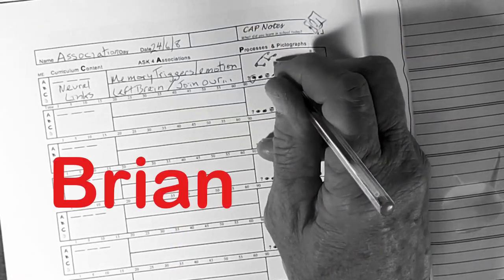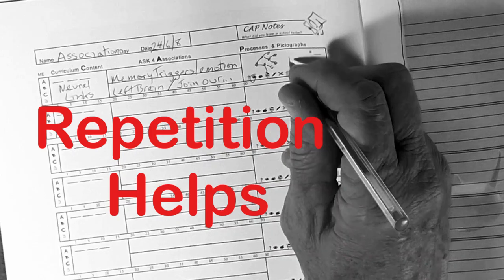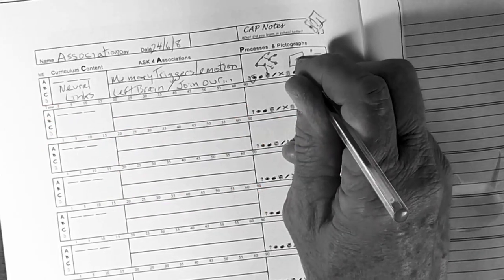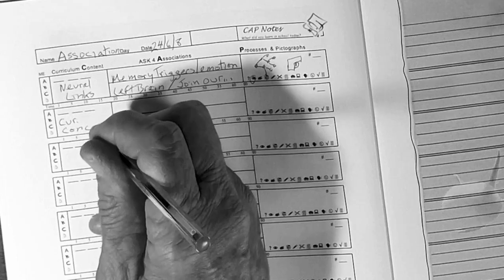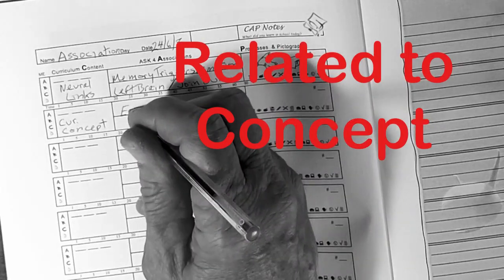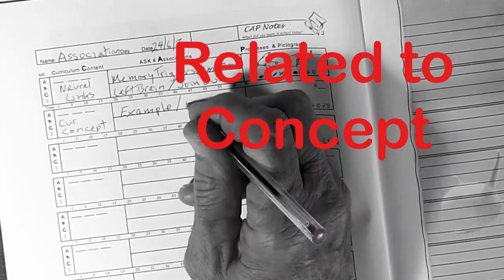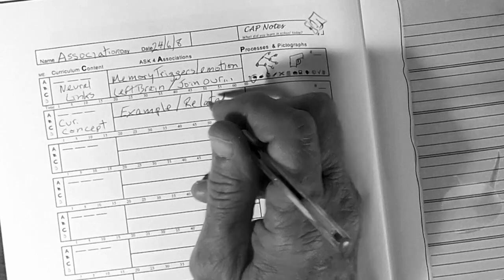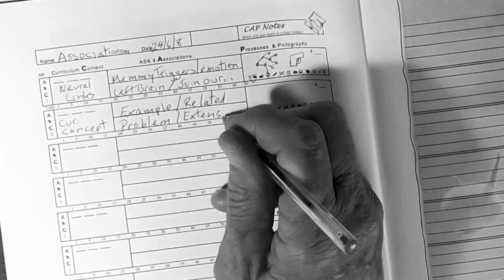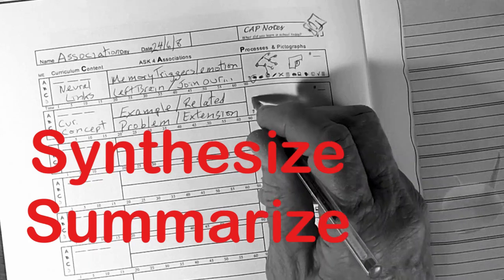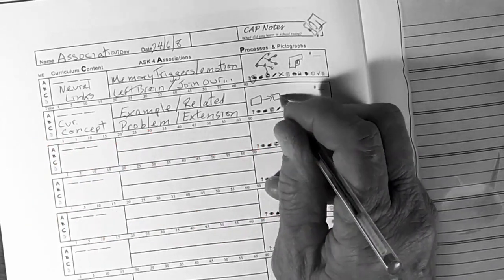Repetition helps as well. Associations are memory triggers, words or phrases that are related to the curriculum content or concept. What are the key vocabulary words that define the idea?